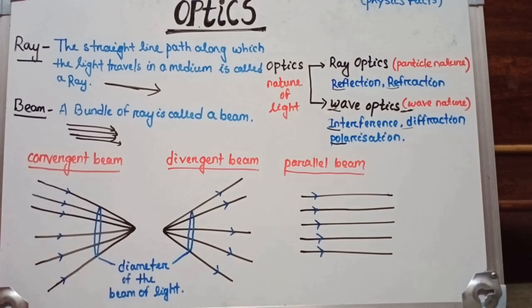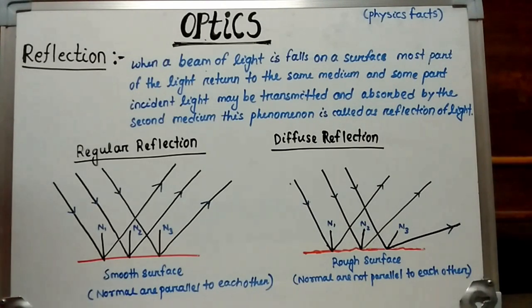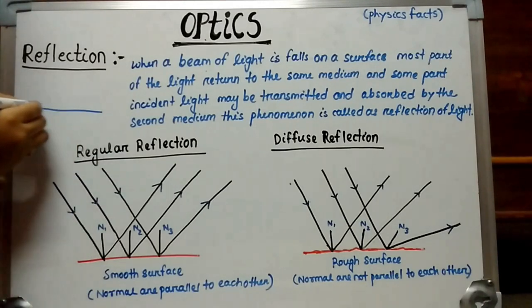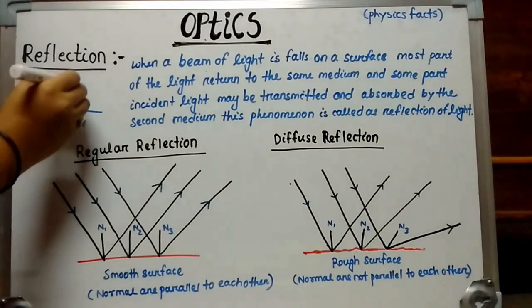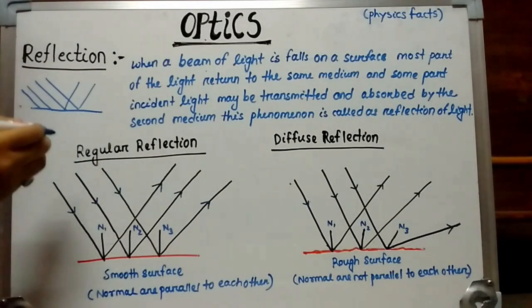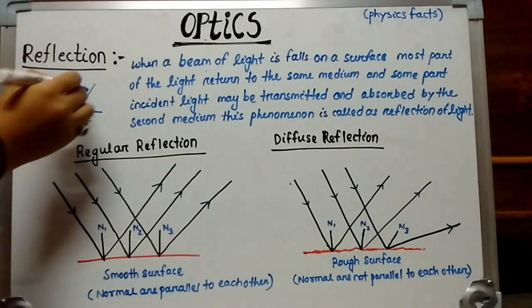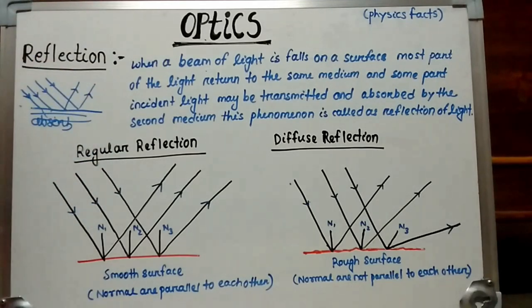Now we go to reflection. When a beam of light falls on a surface, most of the light returns to the same medium, while some part of the incident light may be transmitted or absorbed by the second medium. This phenomenon is called reflection of light.